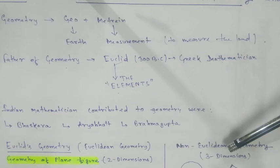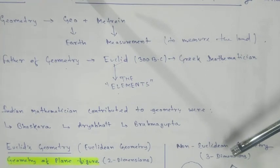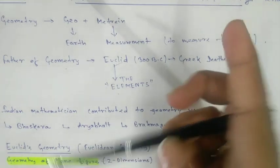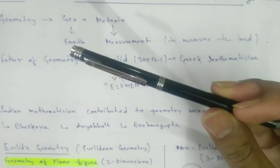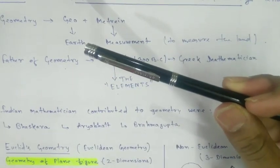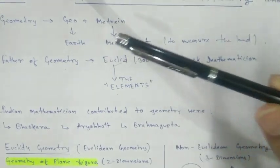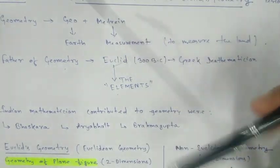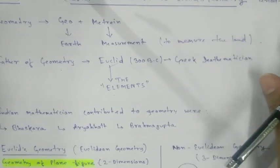Euclidean geometry deals with flat surfaces only. Surfaces which are not flat — that means three-dimensional — belong to non-Euclidean geometry. So there are three types of geometry.